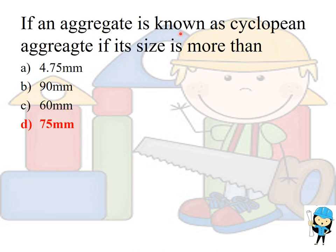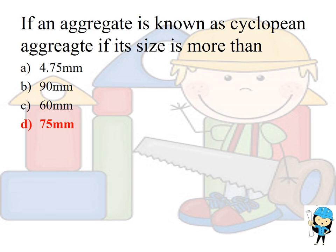An aggregate is known as cyclopean aggregate if its size is more than 75 mm. If the aggregate size is less than 4.75 mm, it is considered fine aggregate. If the size ranges from 4.75 mm to 75 mm, it is known as coarse aggregate. Internal friction between the increments of concrete is decreased by using more water and more coarse aggregate.